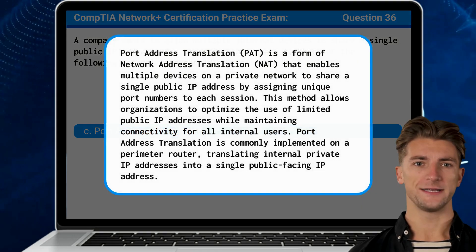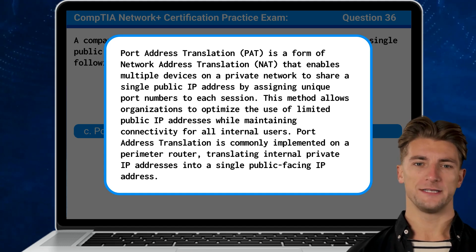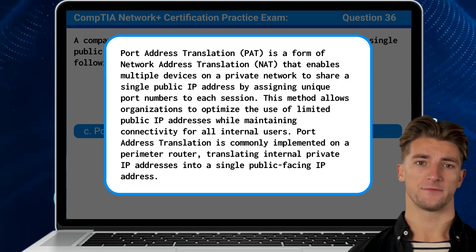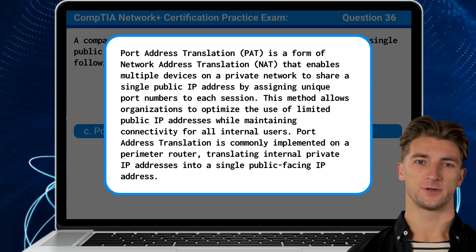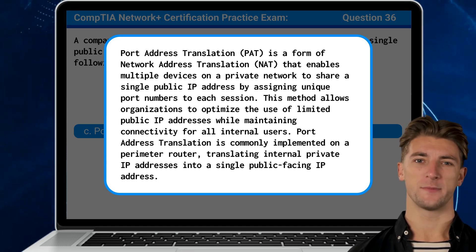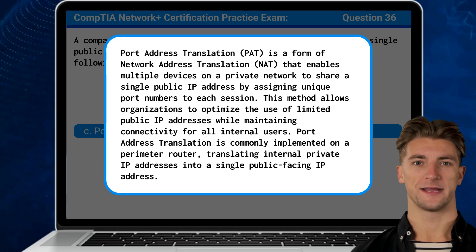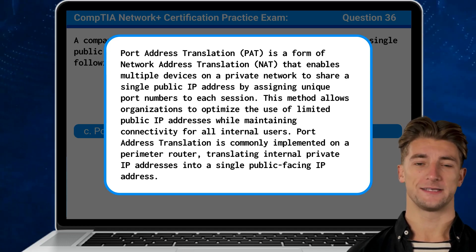Port Address Translation is a form of network address translation that enables multiple devices on a private network to share a single public IP address by assigning unique port numbers to each session. This method allows organizations to optimize the use of limited public IP addresses while maintaining connectivity for all internal users. PAT is commonly implemented on a perimeter router, translating internal private IP addresses into a single public-facing IP address.